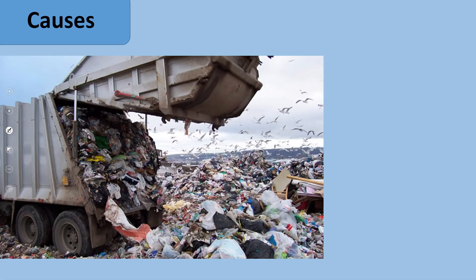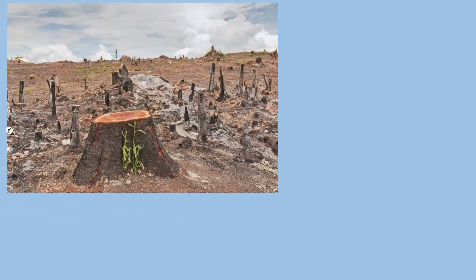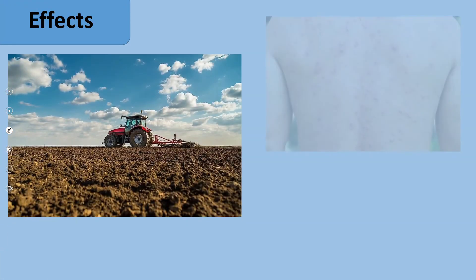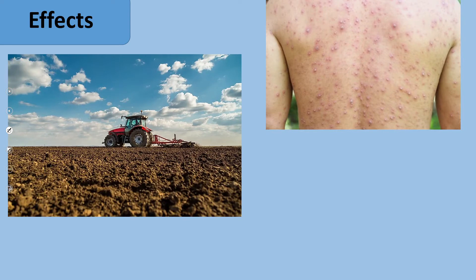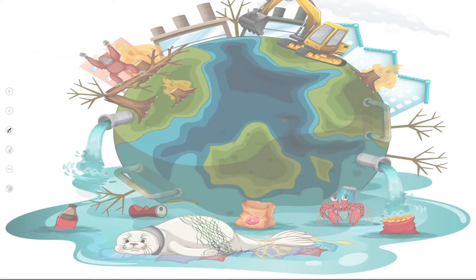Here you can see a summary — land pollution, then the causes: dumping of garbage anywhere causes land pollution, spraying of pesticides and herbicides also causes land pollution, then deforestation and soil erosion. The effects are: infertility of land, skin diseases, fever, and ecosystem imbalance. These are all the effects of land pollution.